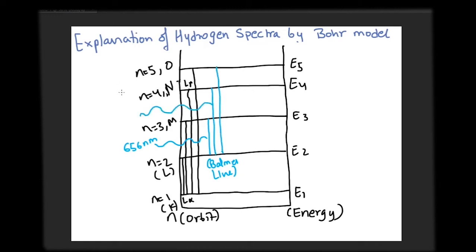while a transition from n equals 4, 5, or 6 correspond to 486.1, 434, and 410.2 nm respectively towards the blue end of the spectrum.